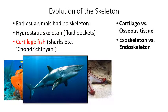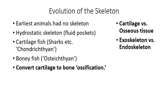Moving on to cartilage fish, collectively called chondrichthians — sharks, stingrays, and dogfish all have a cartilage skeleton. Then on the evolutionary scale, some cartilage fish evolved into osteichthians, commonly called the bony fish, which have a skeleton made of bone instead of cartilage. The conversion of cartilage to bone is a process called ossification. The process of converting cartilage into bone by adding calcium salts is called ossification.